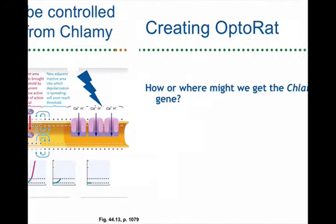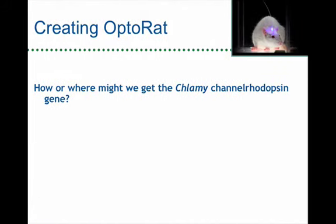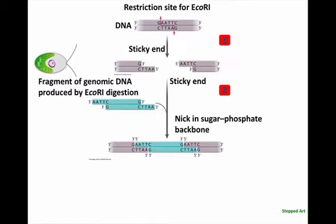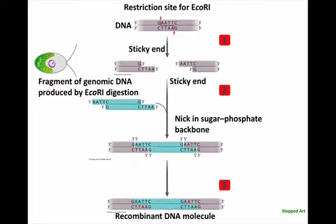We can get control of the depolarization of neurons by inserting channelrhodopsin from Chlamydomonas. Channelrhodopsin is a channel that opens when you flash blue light on it. Take channelrhodopsin from Chlamydomonas, put it into rat neurons, shine lights on them, and the neurons depolarize and the rat turns left. To do that, you need the gene. You could take the Chlamydomonas nuclear genome and chop it up with restriction endonucleases — this particular one, EcoRI, makes a staggered cut at that specific site in double-stranded DNA. We can make a recombinant DNA molecule that contains the Chlamydomonas channelrhodopsin gene.